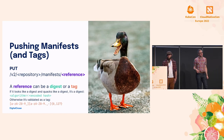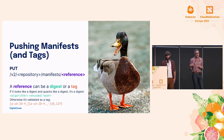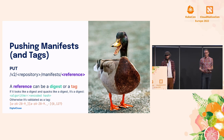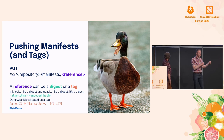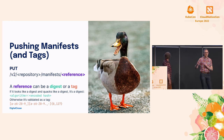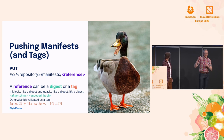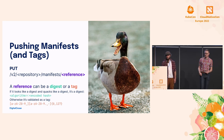Once the registry has all our layers, we can push the manifest. There's only one way to do it. The parameter called 'reference' in the URL can be either a digest or a tag. A digest has a colon in the middle separating the algorithm — like SHA-256 — from the checksum. Registries can differentiate between the two formats this way. You're not allowed to have a colon in a tag.